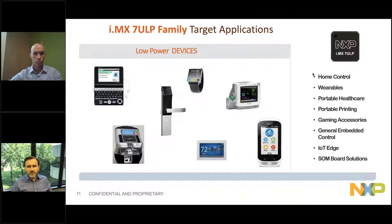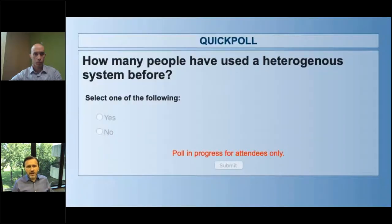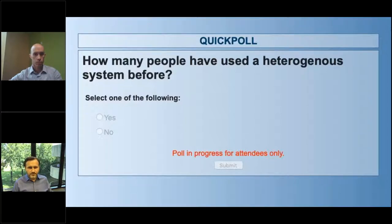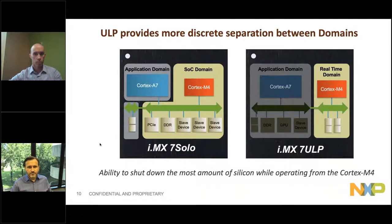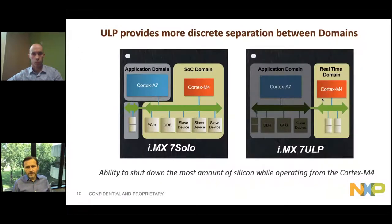Here's a quick block diagram. One notable way we draw block diagrams for the ultra low power family is separating the application domain from the real-time domain, so you understand what's on each power domain. If you decide to shut down the application domain, you still have a clear view of the communication, security, timers, and memory available to you. You have a whole separate system in the real-time domain mimicking a microcontroller. Parts will be available in consumer and industrial grade in 14×14 and 10×10 packages.